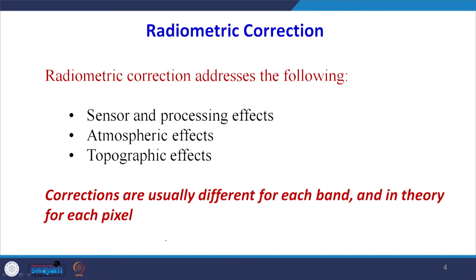Radiometric corrections counteract the sensor and processing effects, atmospheric effects, and topographical effects. Topographic effects include shadow — due to topography, there will be lots of shadow in the image, and it is difficult to identify objects within the shadow region because they appear as darker shades. We will fail to identify objects just below the shadow. These corrections are required, covering the effect of atmosphere, topography, and sensor system for each band.